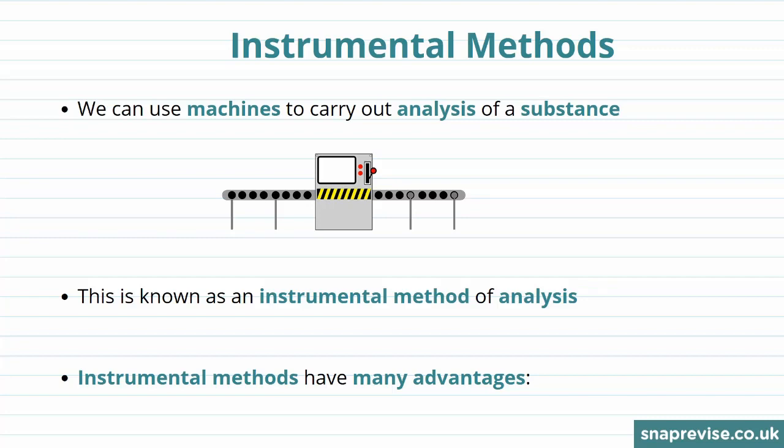If you've watched our videos on chromatography and the tests for gases, cations and anions, you'll know that there are many different ways that we can find out the identity of a product in the lab. However, we can also use machines in order to carry out analysis of our substance, and this is known as an instrumental method of analysis.